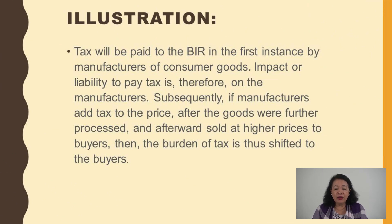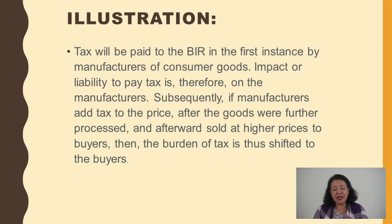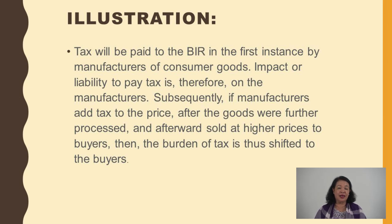For example, tax will be paid to the BIR in the first instance by the manufacturers of consumer goods. The impact or liability to pay tax is on the manufacturer, as the registered taxpayer with the obligation to remit. But subsequently, the manufacturer adds that tax to the price of the goods being sold, so the tax burden moves to the buyer. The manufacturer's only obligation is to remit the VAT to the government.